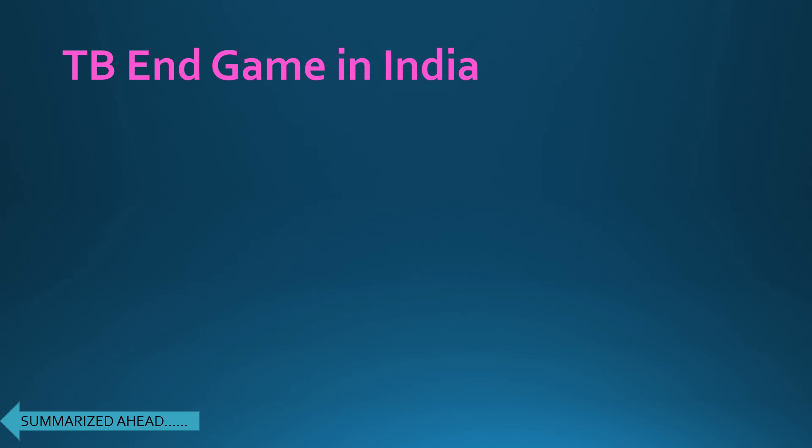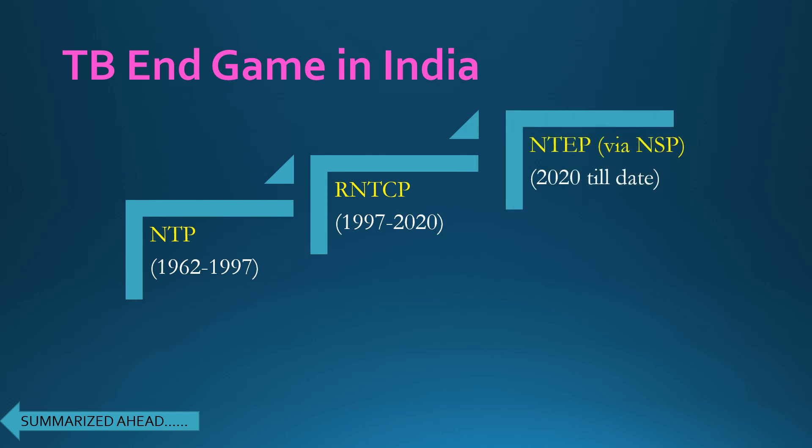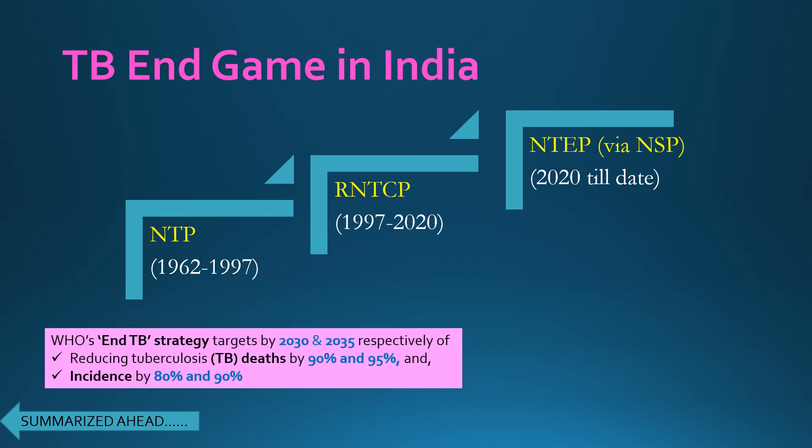Let's have a brief idea about the history of tuberculosis programs in India. The Government of India first launched the National Tuberculosis Program from 1962 to 1997, followed by the Revised National Tuberculosis Program from 1997 to 2020, and the National Tuberculosis Elimination Program in 2020, launched via the National Strategic Plan.